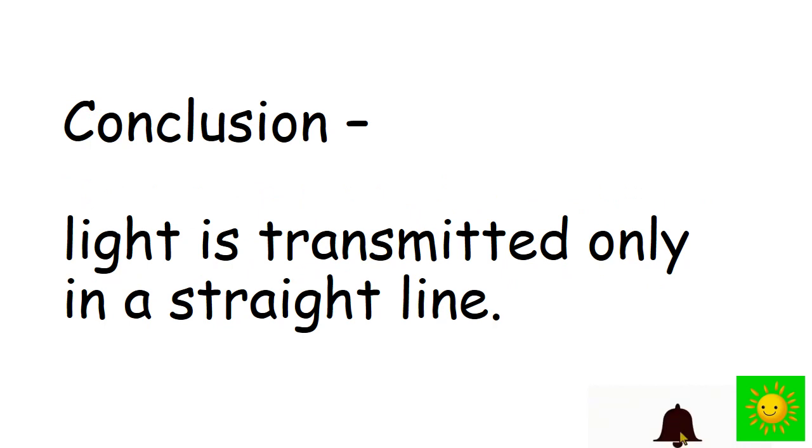Here you are able to observe the flame because light travels from the flame to the eye through the holes. When the holes are in a straight line the flame could be observed, and when they are not in a straight line the flame couldn't be seen. Now you can understand that light is transmitted only in a straight line.